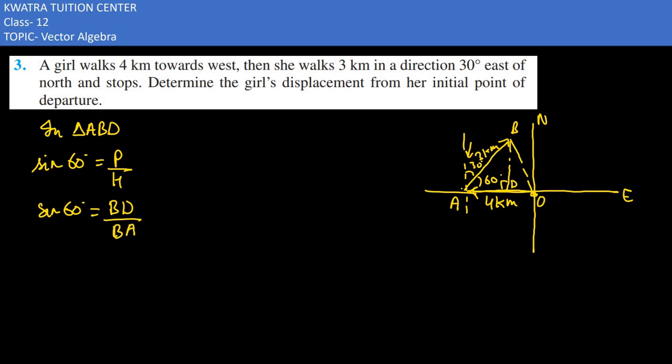Hypotenuse is BA or AB. Sin 60, what value will you put? You would be putting root 3 by 2. BD value you don't have. BA you have taken as 3. If you take 3 to the right side, what will you get? You'll get 3 root 3 divided by 2 as BD.